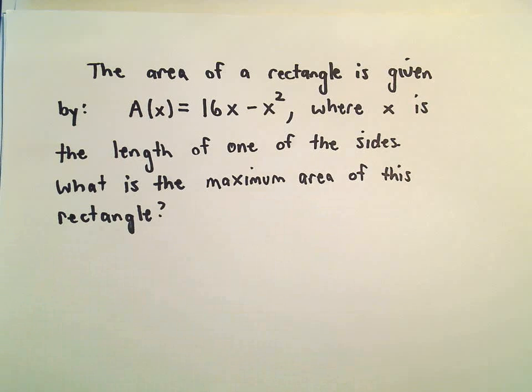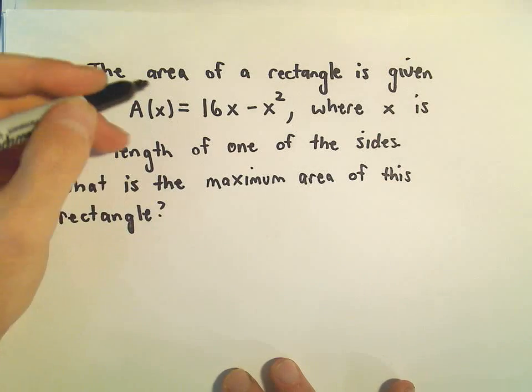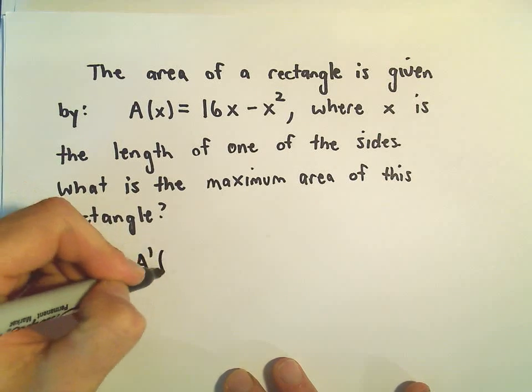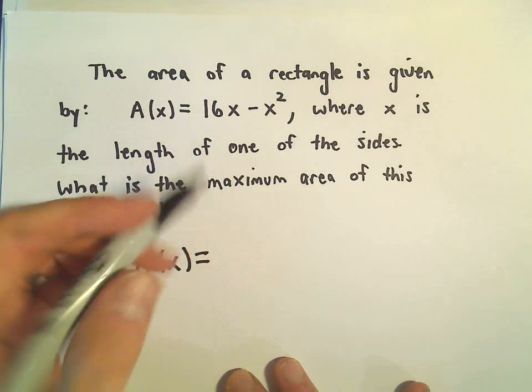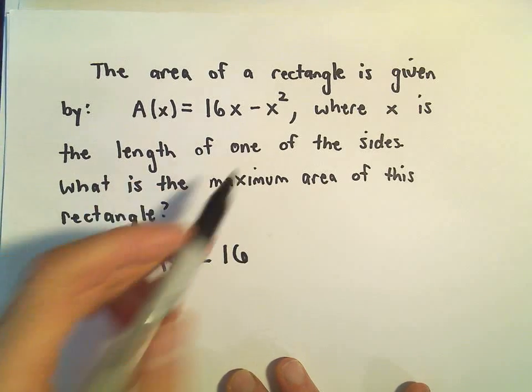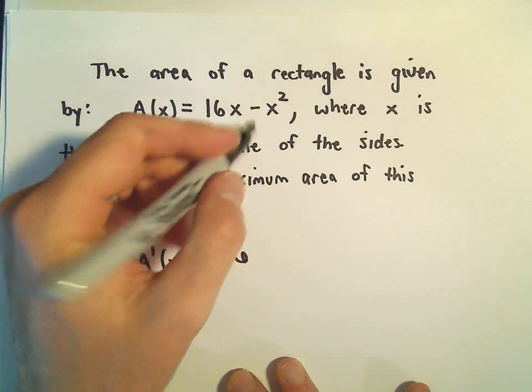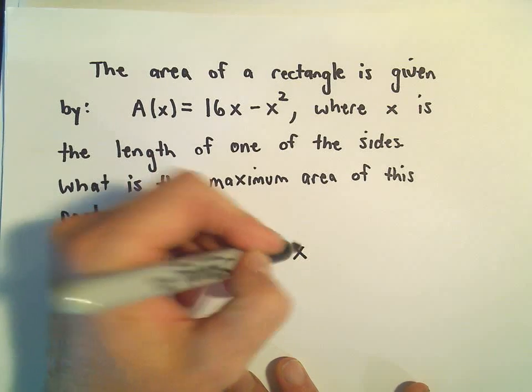Okay, so again, to find a maximum of a function, what we do is we take the derivative of the function, and then we look for these critical points. So the derivative of 16x would just be 16. The derivative of negative x² would give us negative 2x.